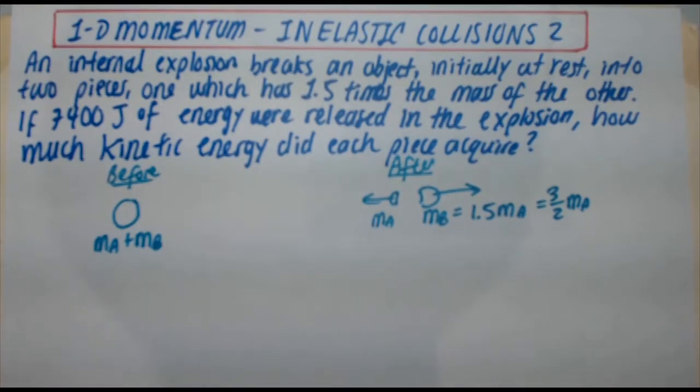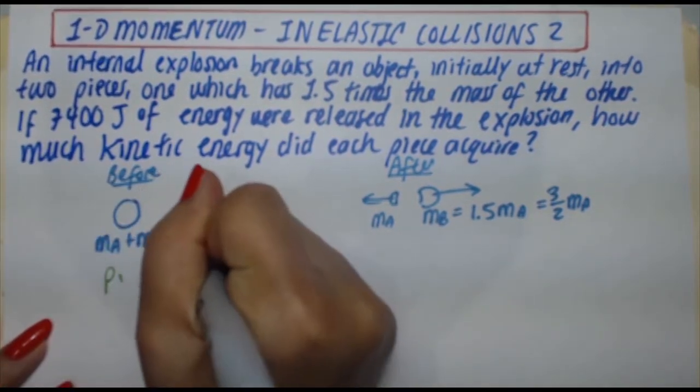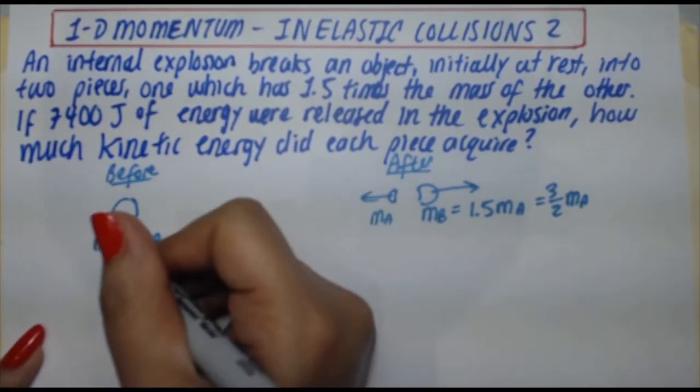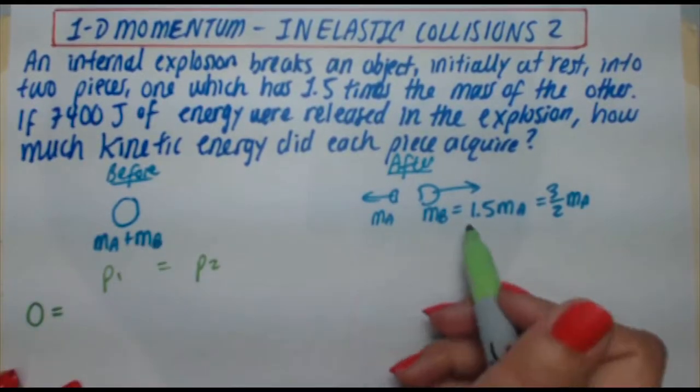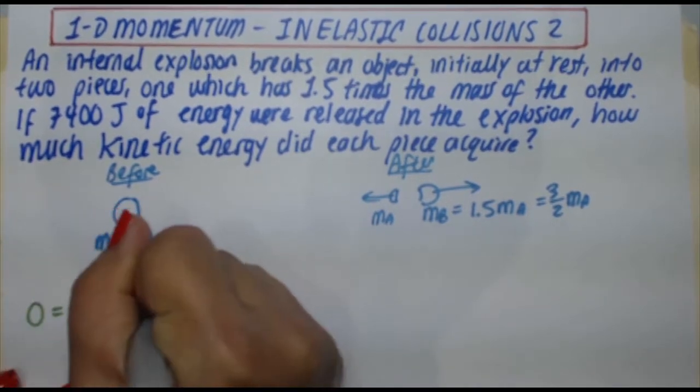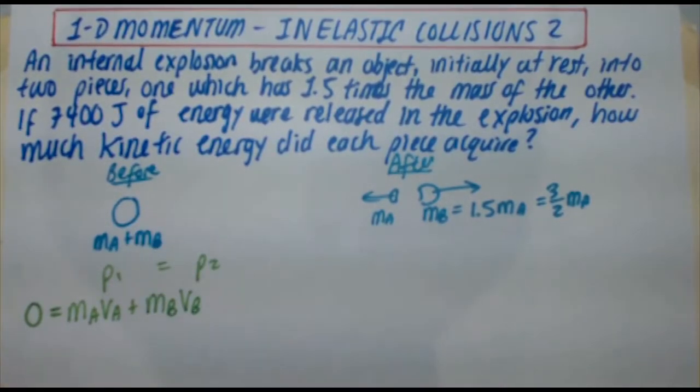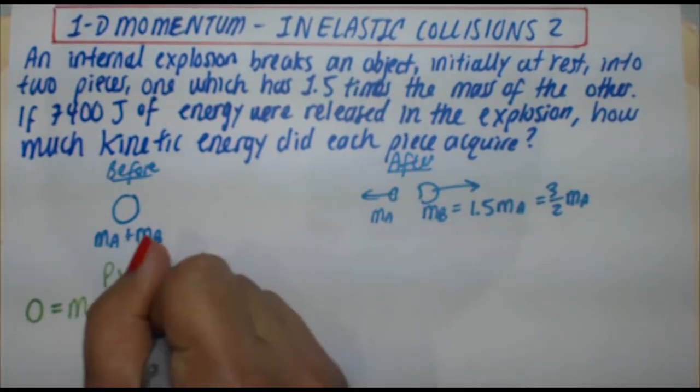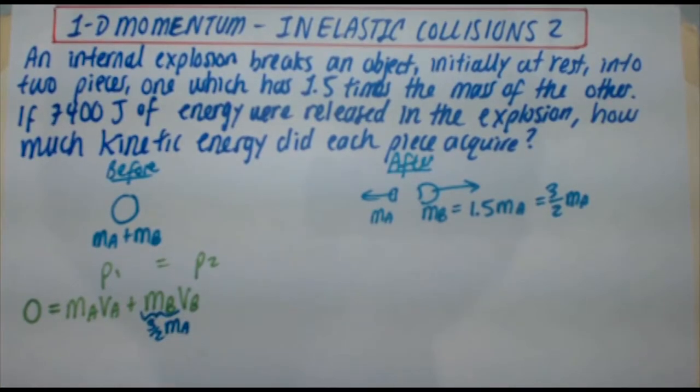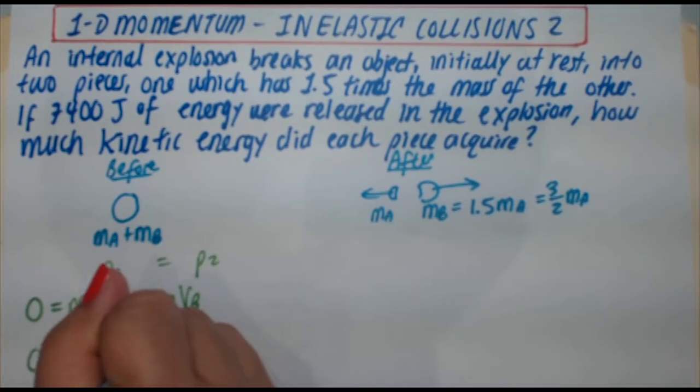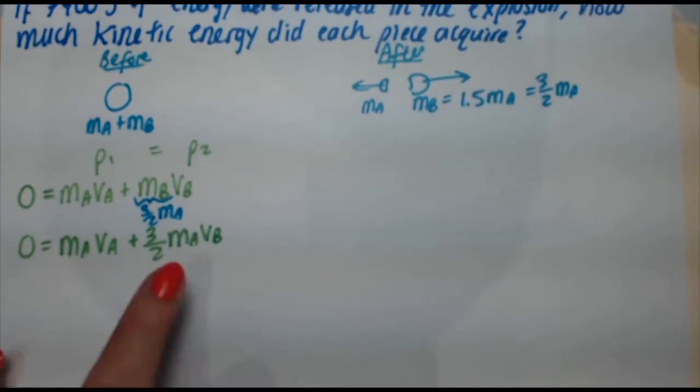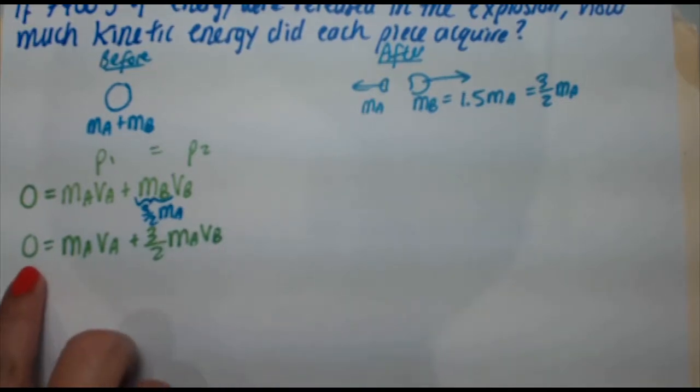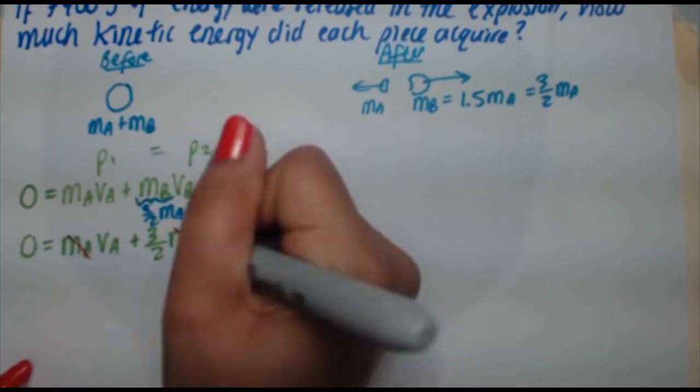Okay, so I'm going to go ahead and start this with a conservation of momentum approach. P1 equals P2. Why? Because momentum is always conserved. So initially, my momentum is zero because nothing's moving. P2, we've got both of them moving. So it's going to be mA vA plus mB vB. Now I know that mB is 3 halves mA, so I'm going to plug that in. So zero equals mA vA plus 3 halves mA vB. Now because I have mA appearing in both terms, imagine factoring it out and then dividing both sides by mA. The mA would disappear on the right and zero divided by anything is zero. So essentially, the mAs disappear.